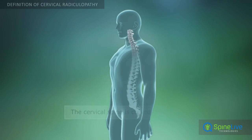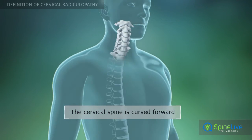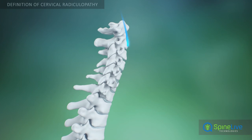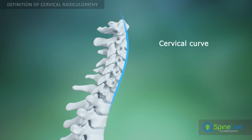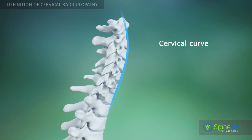The cervical region of the spine is curved forward. This curving helps to absorb pressure, vibrations, and shock that occur with movement.